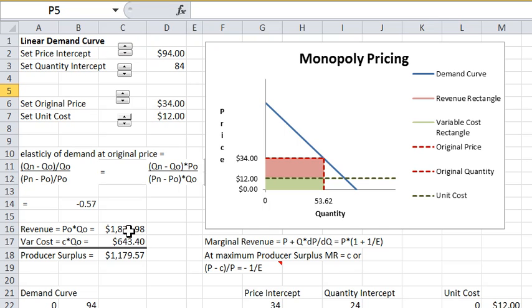Revenue goes up because demand is inelastic. And when you raise price when demand is inelastic you actually increase revenue. Costs go down because you're selling less. So when demand is inelastic it's definitely a good idea to raise price.